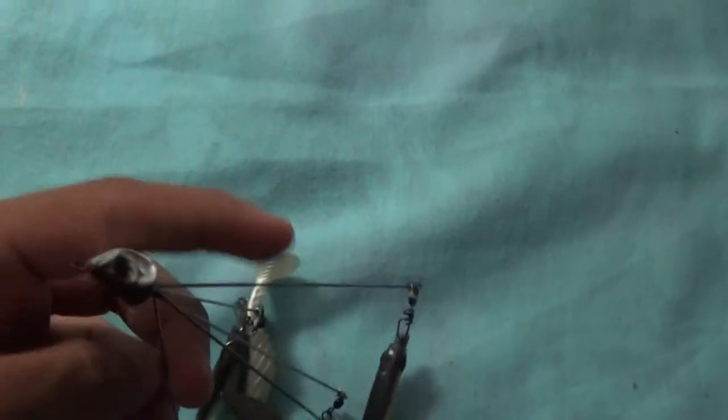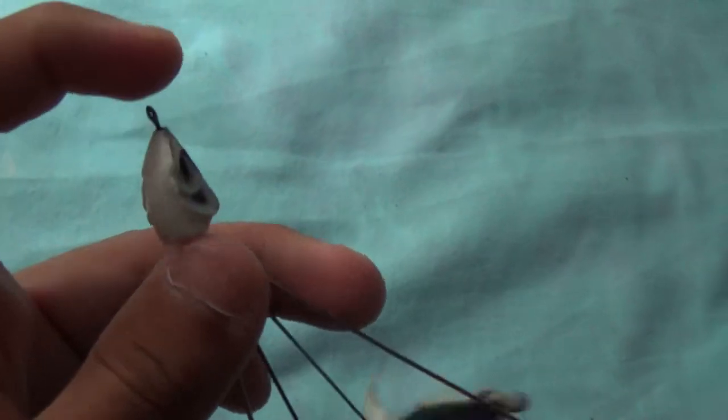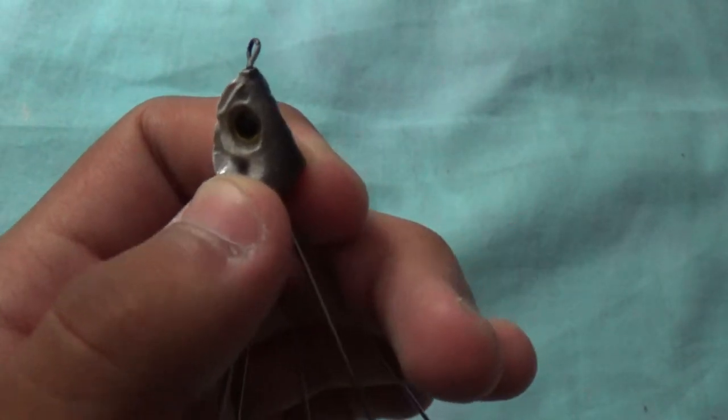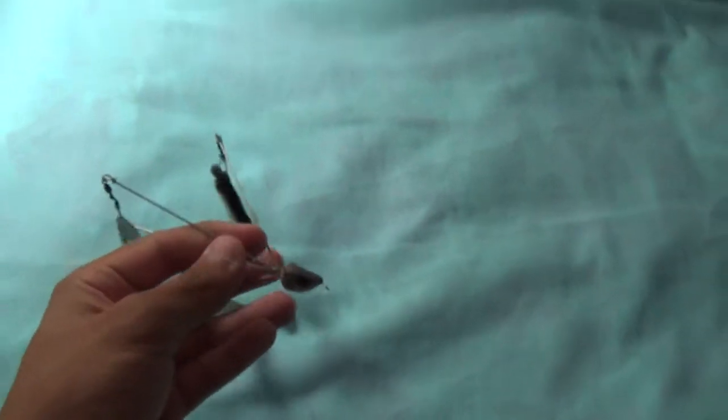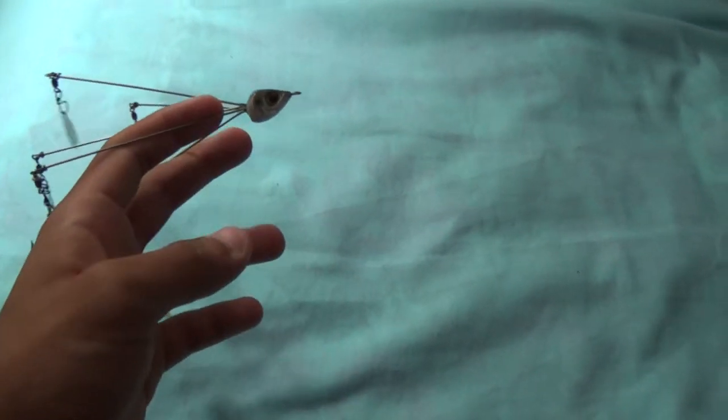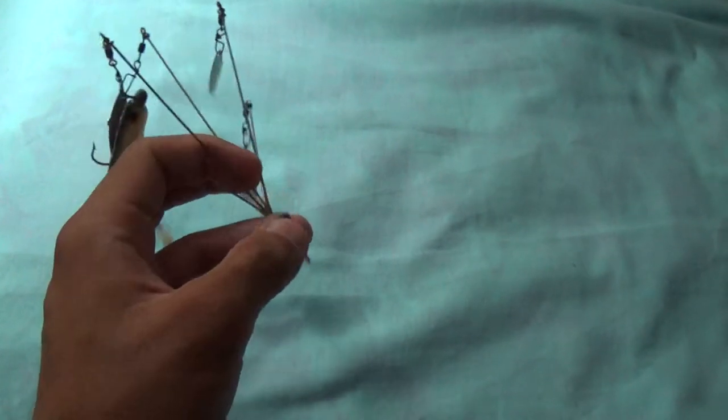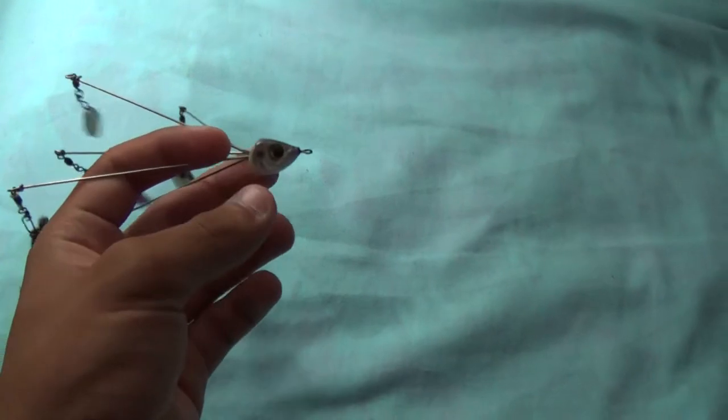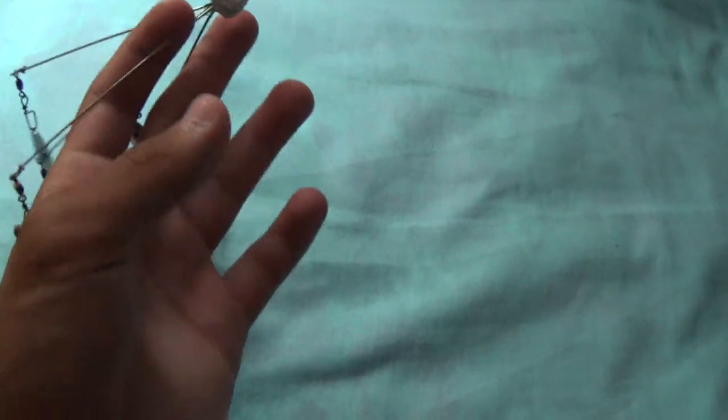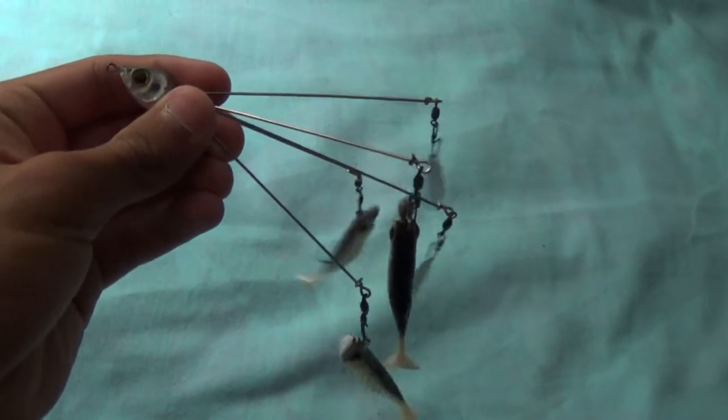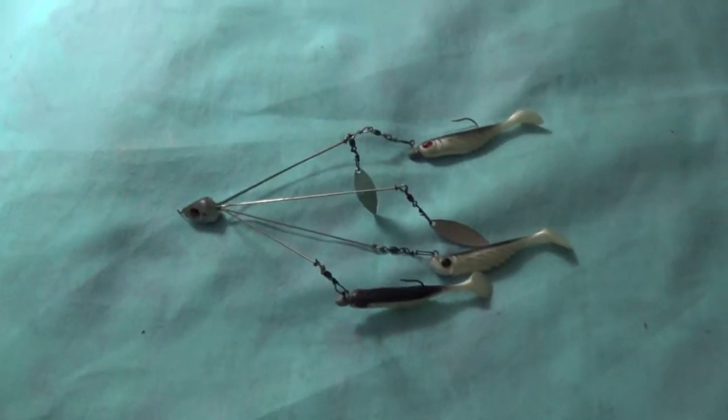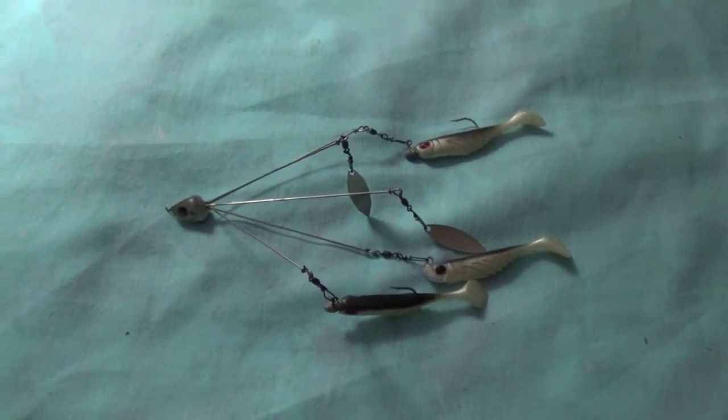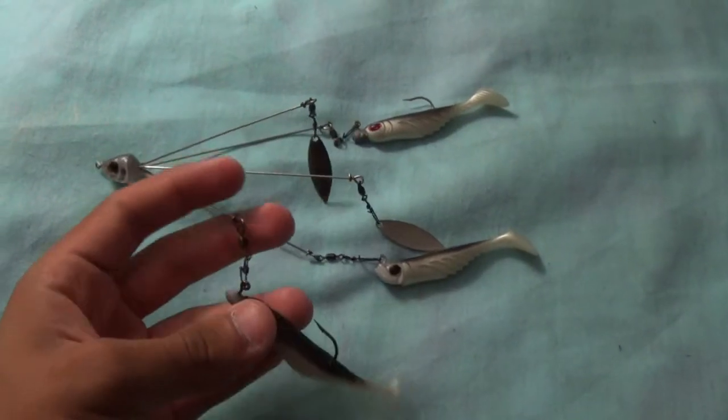The head is a durable plastic head. When you throw this thing on a slow retrieve or any retrieve, it won't run sideways because the weight is on the head. It's plastic so it's very light, runs straight, so you have a better possibility of hooking a fish.